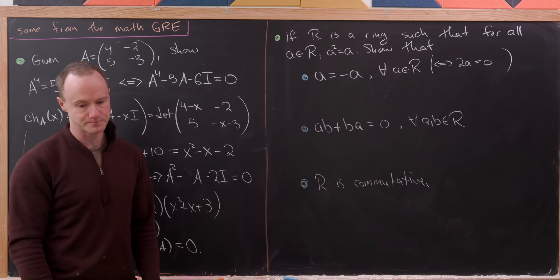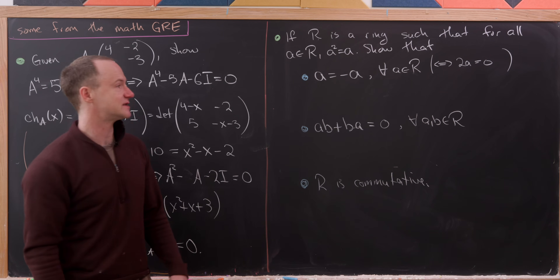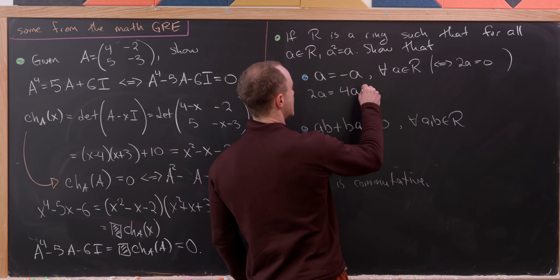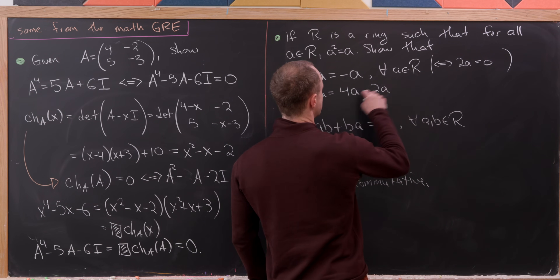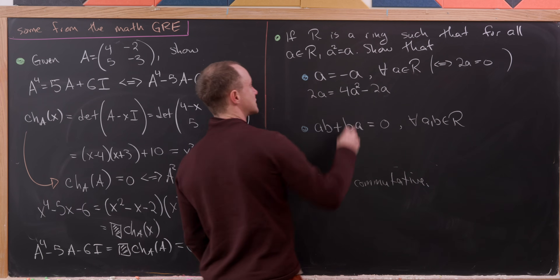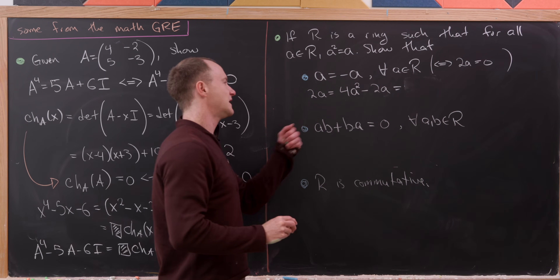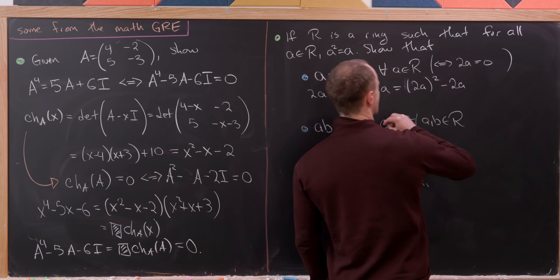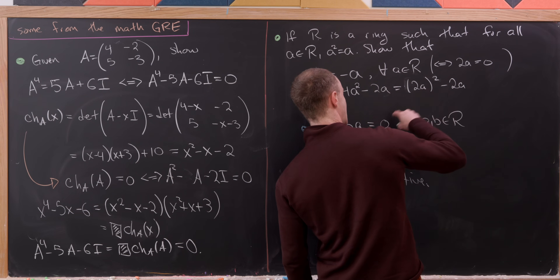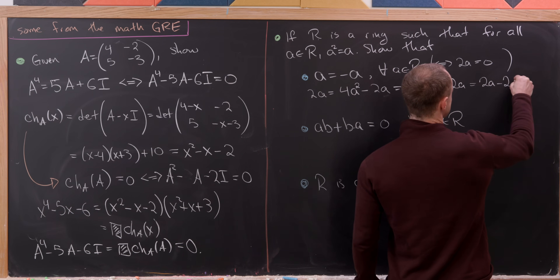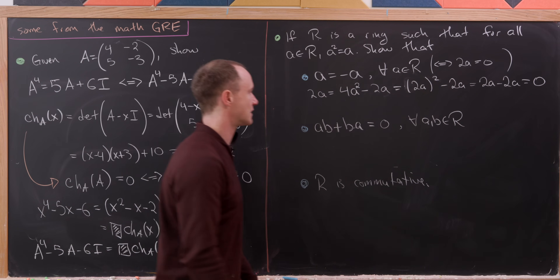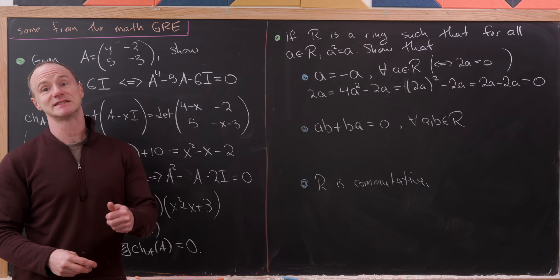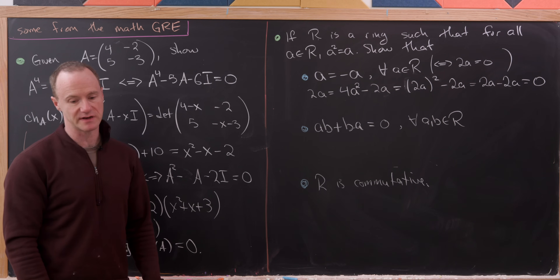To show 2a = 0: observe that 2a = 4a − 2a = 4a² − 2a = (2a)² − 2a. Since (2a)² = 2a (by our hypothesis applied to 2a), this becomes 2a − 2a = 0. So 2a = 0, which means a is its own additive inverse: a = −a.